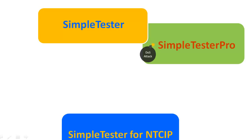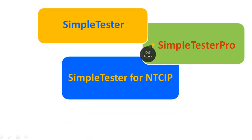SimpleTester NTCIP has the added capability to communicate over a serial connection using PMPP as specified by the NTCIP specification, to enable local governmental agencies and transportation infrastructure companies to test devices like traffic signal controllers, cameras, and ramp metering controllers.